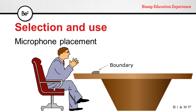Next in distance is the boundary microphone — a little farther than the gooseneck, but if placed correctly it will work well. Last is the hanging microphone, which usually ends up being the farthest away from the sources, so these microphones are typically going to pick up a lot of background noise in the room.